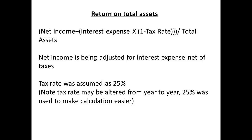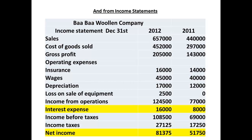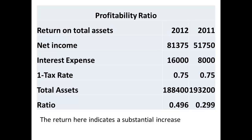The return on total assets is obtained by adjusting the net income for interest expense net of taxes, and then dividing this revised total by the total assets. For the purpose of calculation, the tax rate was assumed at 25%, but remember tax rates vary and the correct tax rate at the time must be used. The information required is obtained from the income statements and is shown highlighted here. The ratio shows a substantial increase, from 0.299 in 2011 to a value of 0.496 in 2012. This can be considered to be a healthy sign.